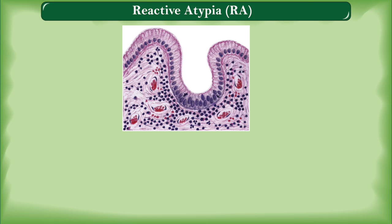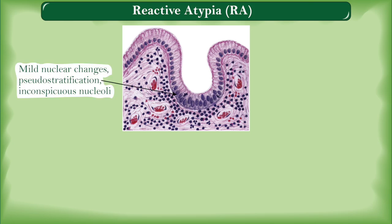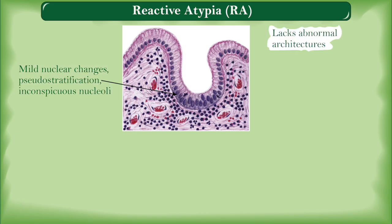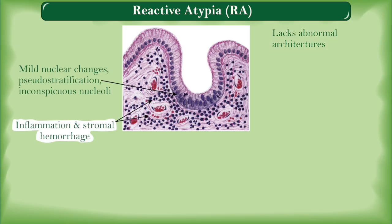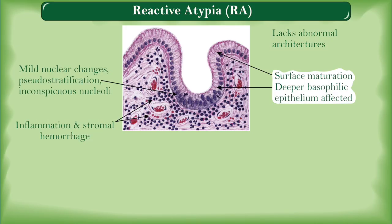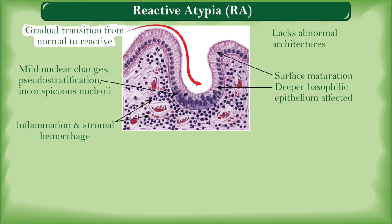There are certain histomorphological features that favor reactive atypia: mild nuclear changes, pseudostratification, small to inconspicuous nuclei. It lacks abnormal architectural patterns like micropapillary, cribriform, or tufting. Background acute and chronic inflammation and stromal hemorrhage may be present. It often affects the deeper aspect of epithelium with basophilia and surface maturation. Reactive atypia is focal in a background of normal-appearing epithelium, with gradual transition from normal to reactive epithelium.